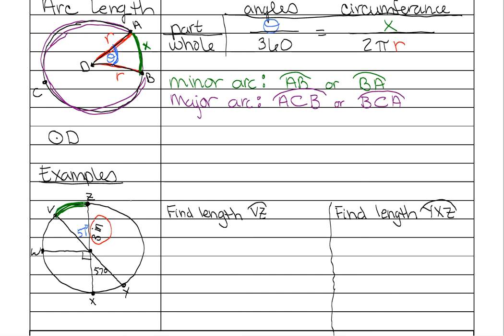So now we can set up our problem. We do angles first. So part angle over the whole angle. My part of my angle is 57 over my entire angle of a circle is 360.